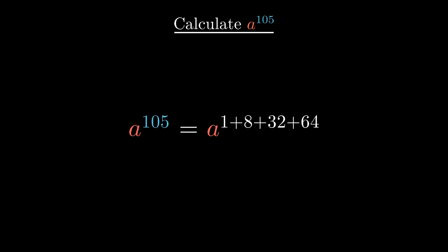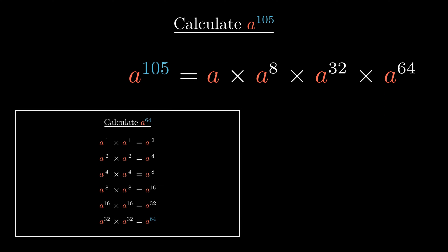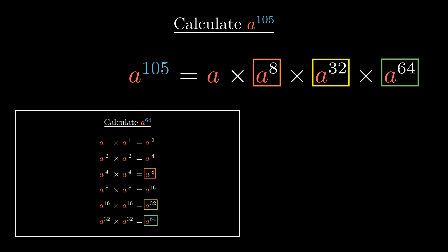So we can write a to the power of 105 as a to the power of 1 plus 8 plus 32 plus 64, which is equivalent to a times a to the power of 8, times a to the power of 32, times a to the power of 64. As we just demonstrated, calculating a to the power of 8, a to the power of 32, and a to the power of 64 is easy, and we just need to multiply them together.